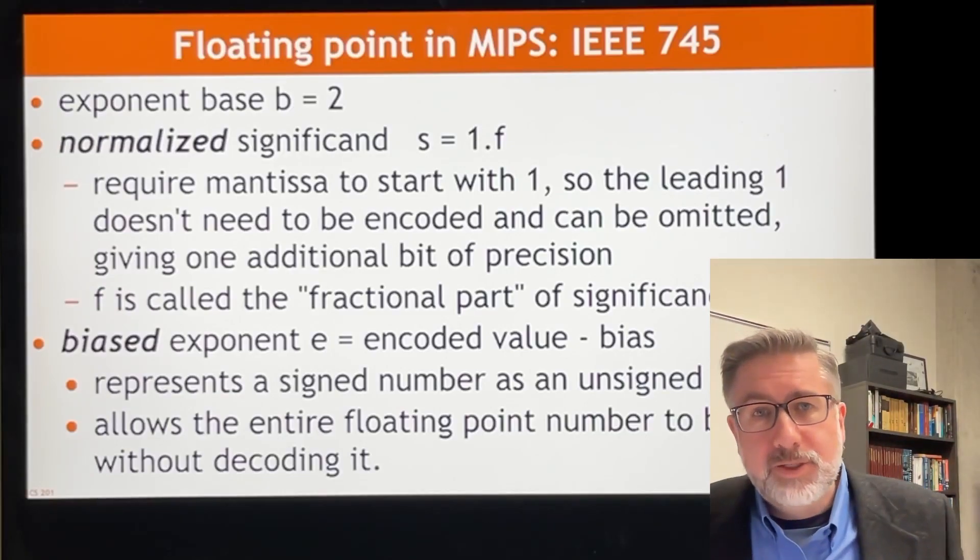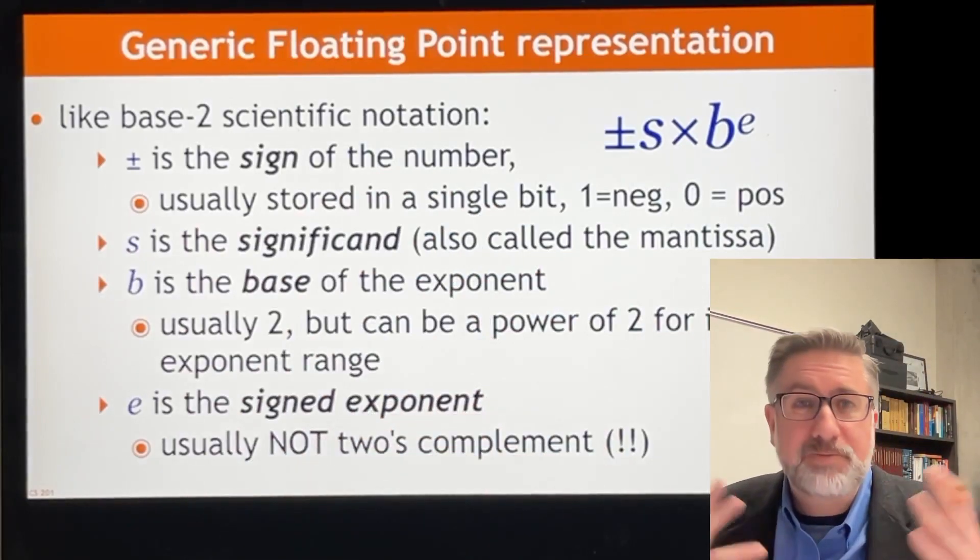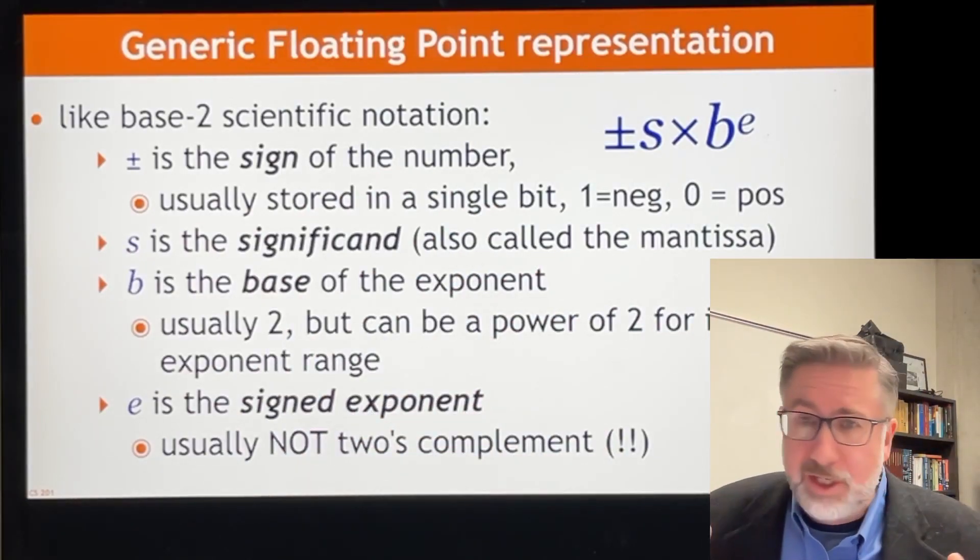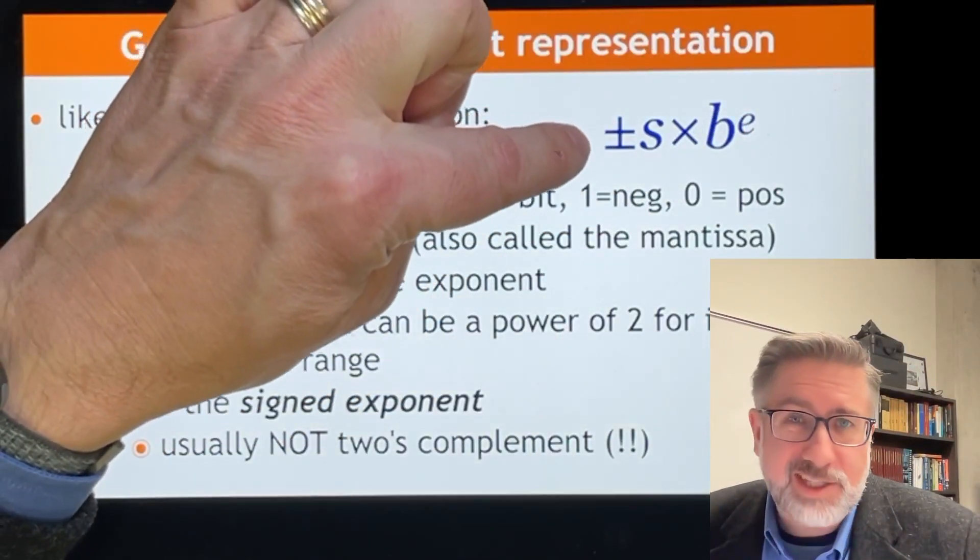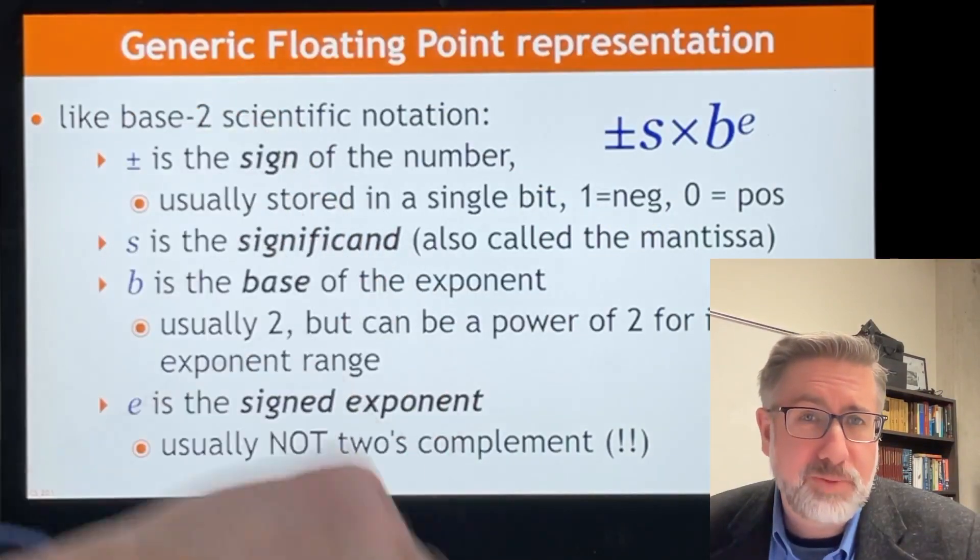So in the previous video, we showed how all floating point numbers or all exponentialized fractional numbers can be stored as a number like this: s, plus or minus s, times some base b to the power of some exponent e.